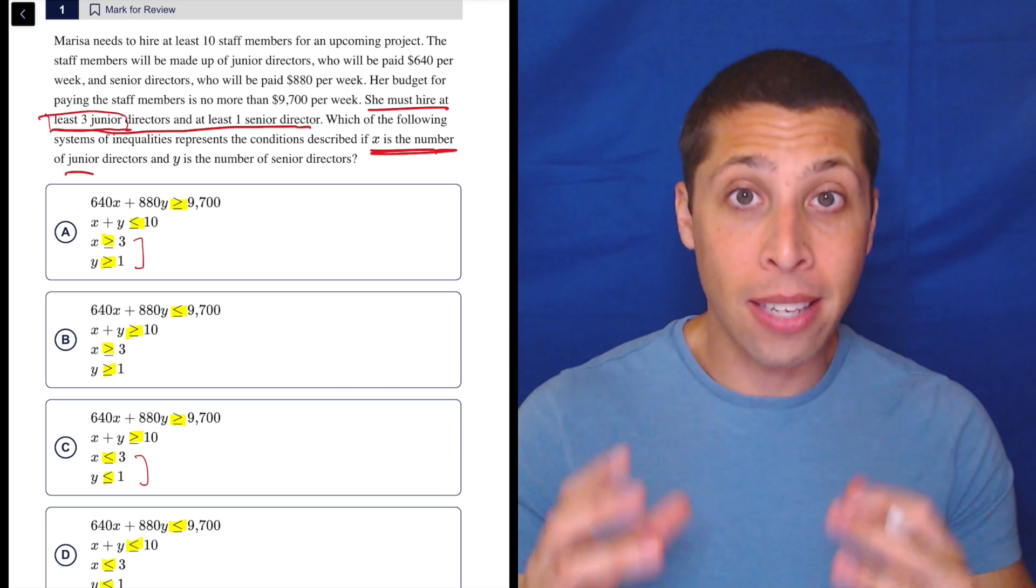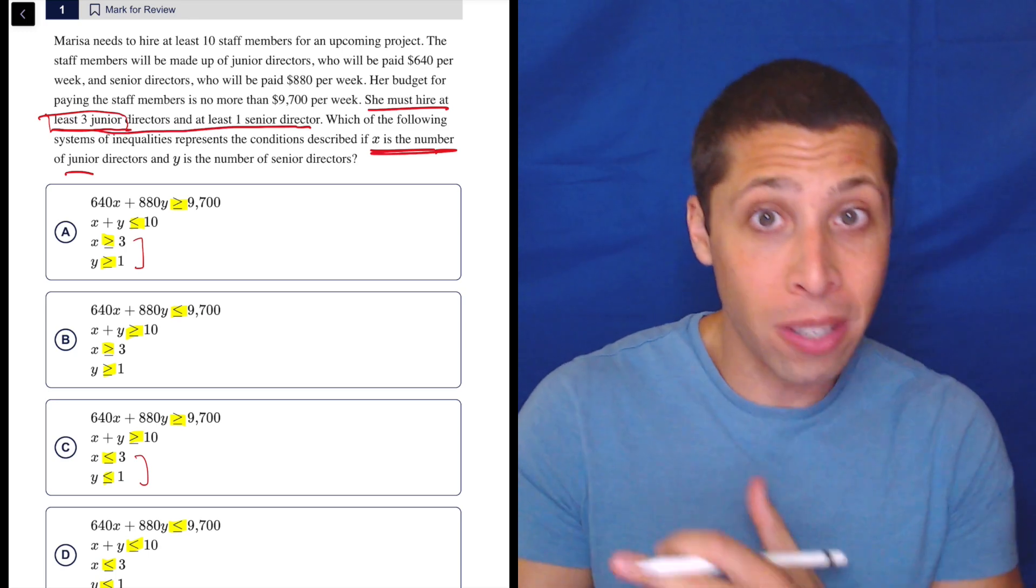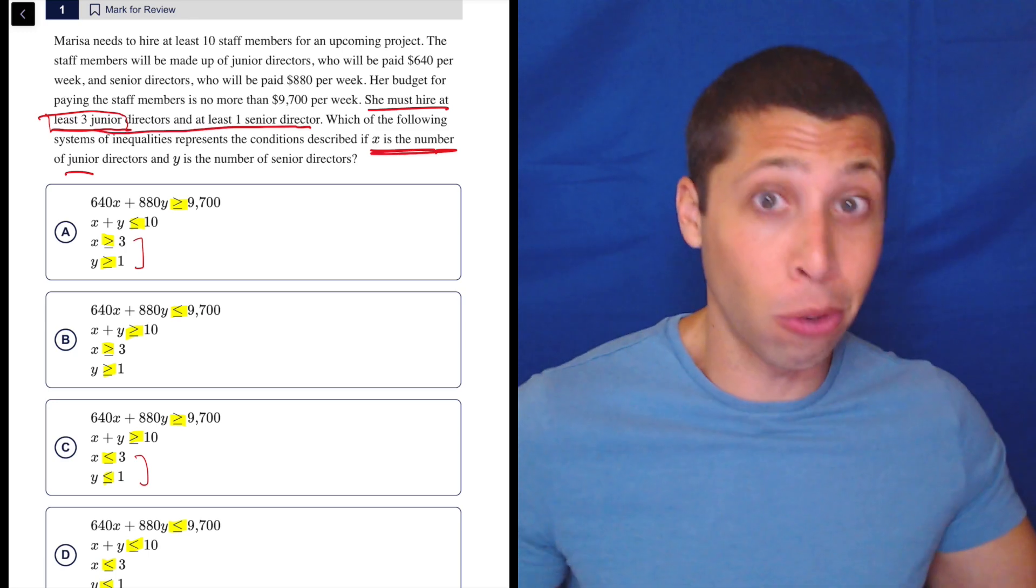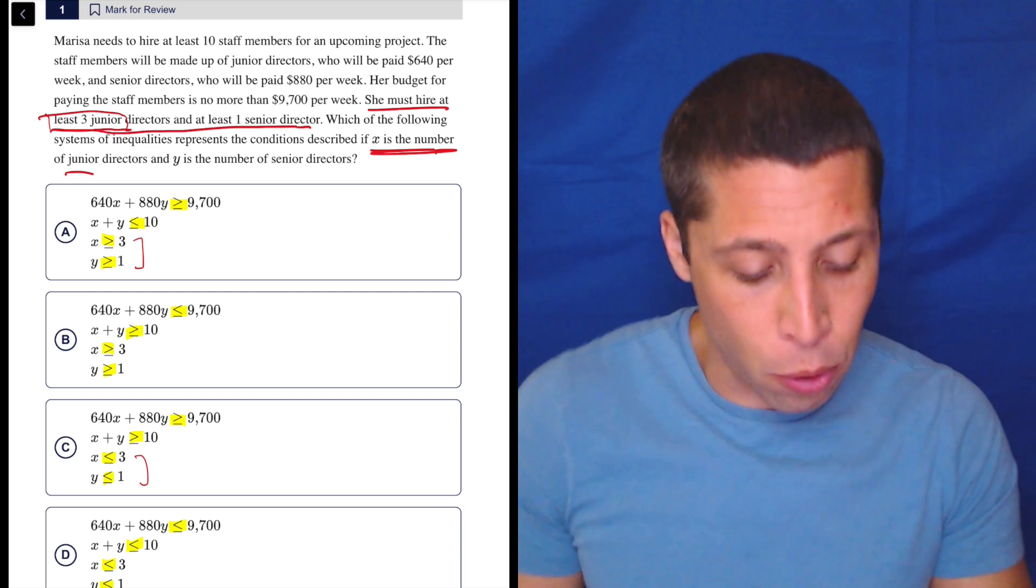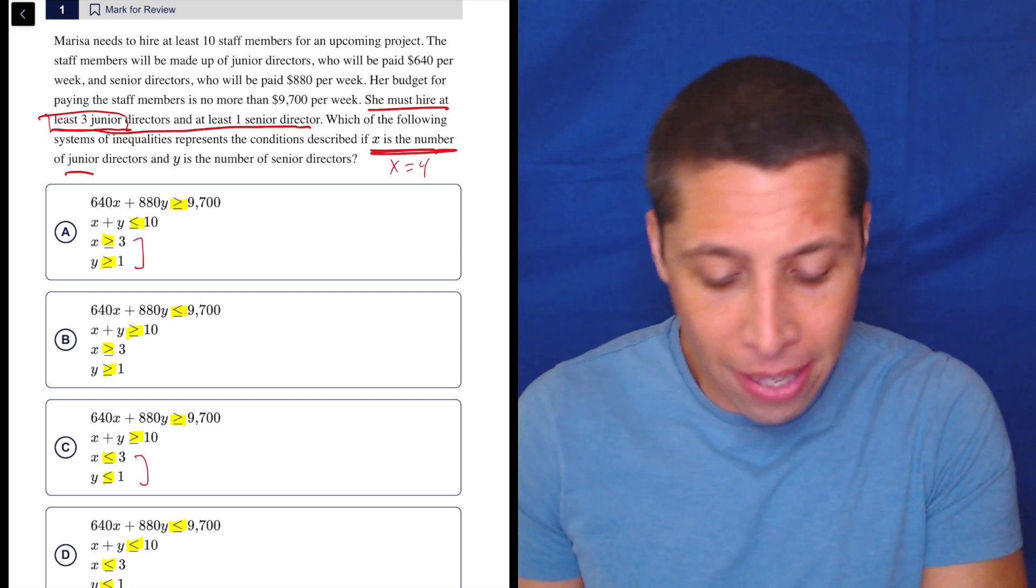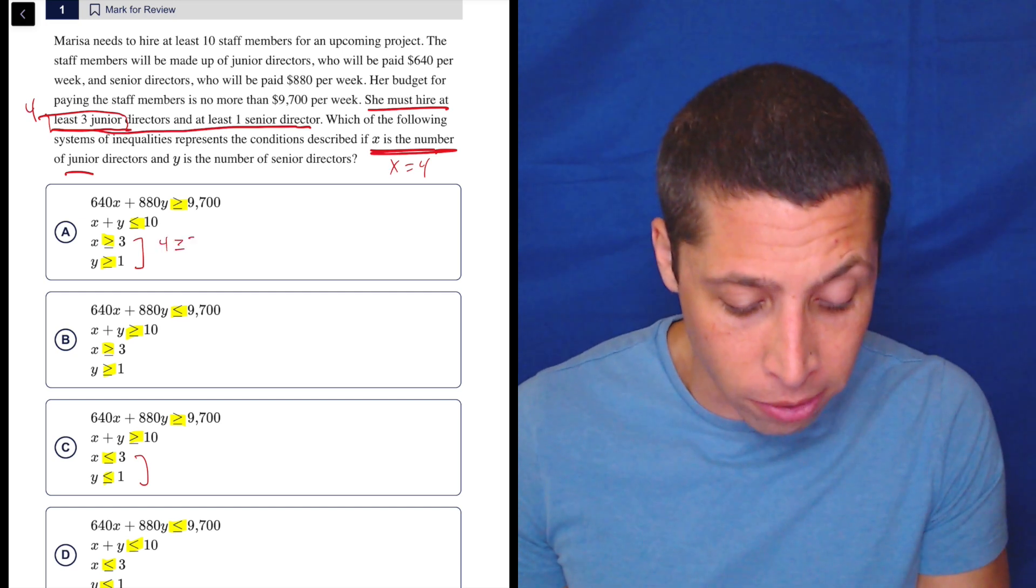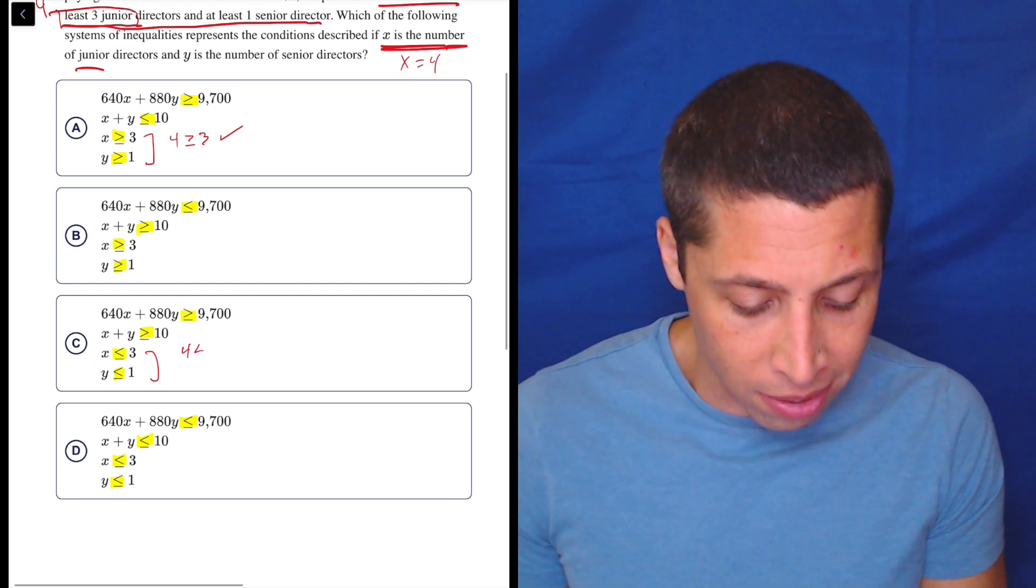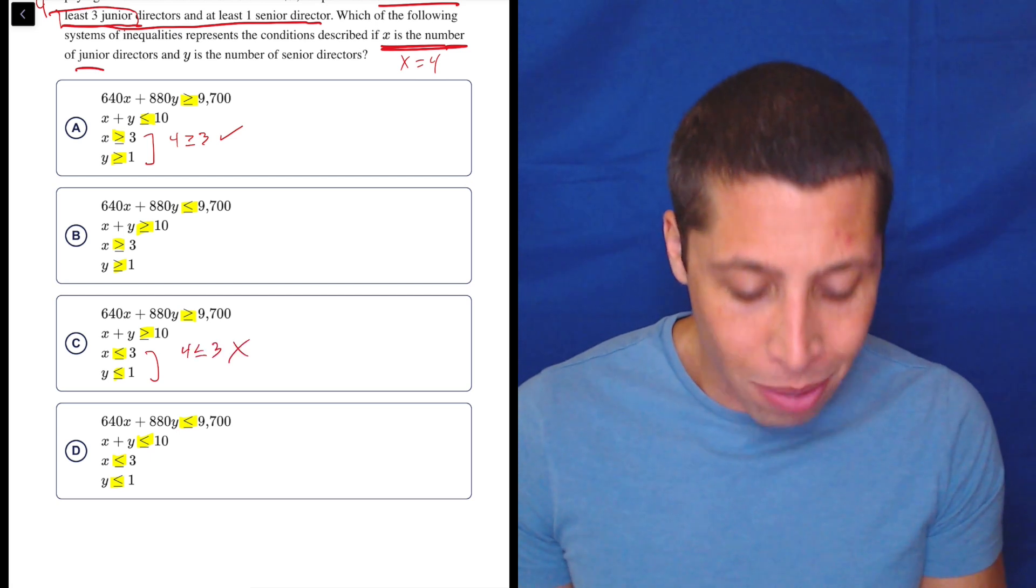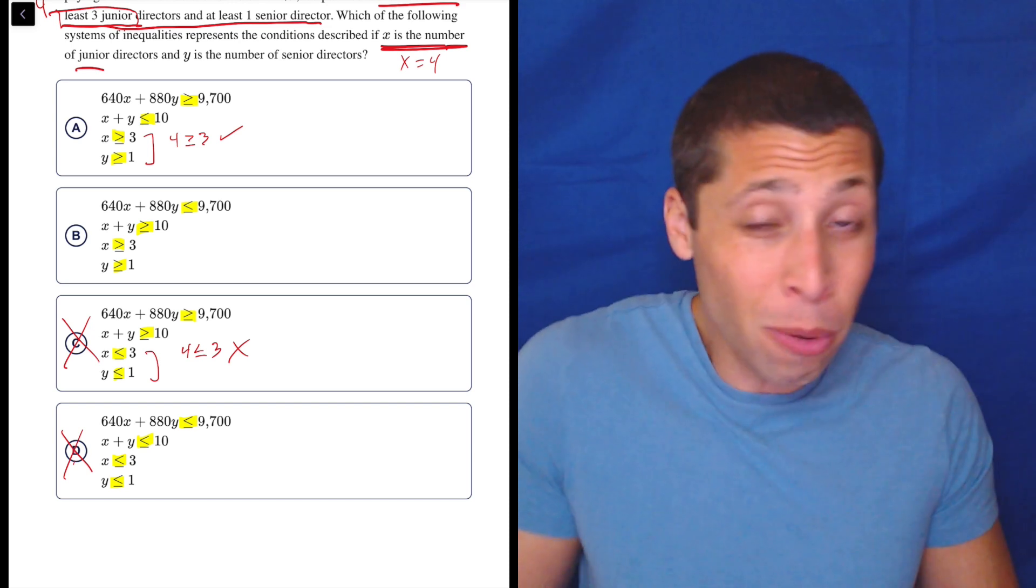So at least means it's got to be more than three probably. So three is good, but two is not. One is not. Four, five, six, those are great. So which one is going to mean that? Well, you can even plug in if you want. Let's just pretend X is four for a second because that makes sense with what they're saying here. And that would mean that this is four is greater than or equal to three. That's true. Whereas if I go down to choice C here, four is less than or equal to three. No, it's not. So just like that, I know it's not these two choices.